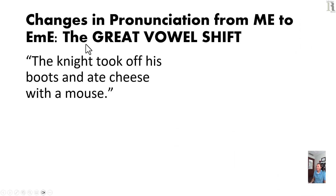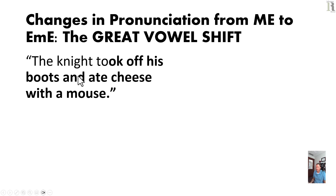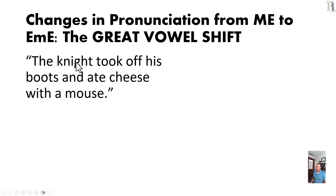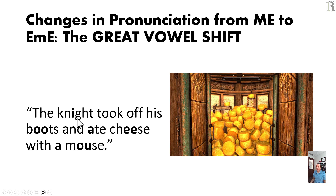Changes in pronunciation from Middle English to Early Modern English — the Great Vowel Shift. In Modern English we say: 'The knight took off his boots and ate cheese with a mouse.' This sentence has all the long vowels in modern English. But in Middle English, we'd say something like: 'The kni-cht took off his boots and aht cheese with a moos.' The vowels are E, O, A, E, U — similar to the five vowels in most European languages, including Germanic and Romance languages. It's sometimes called the five-vowel system.